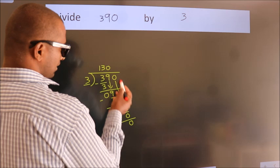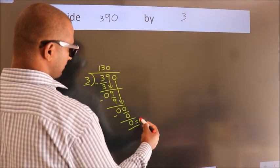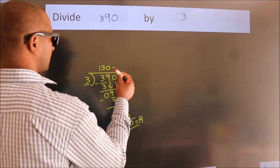After this, no more numbers to bring it down, so we stop here. This is our remainder. This is our quotient.